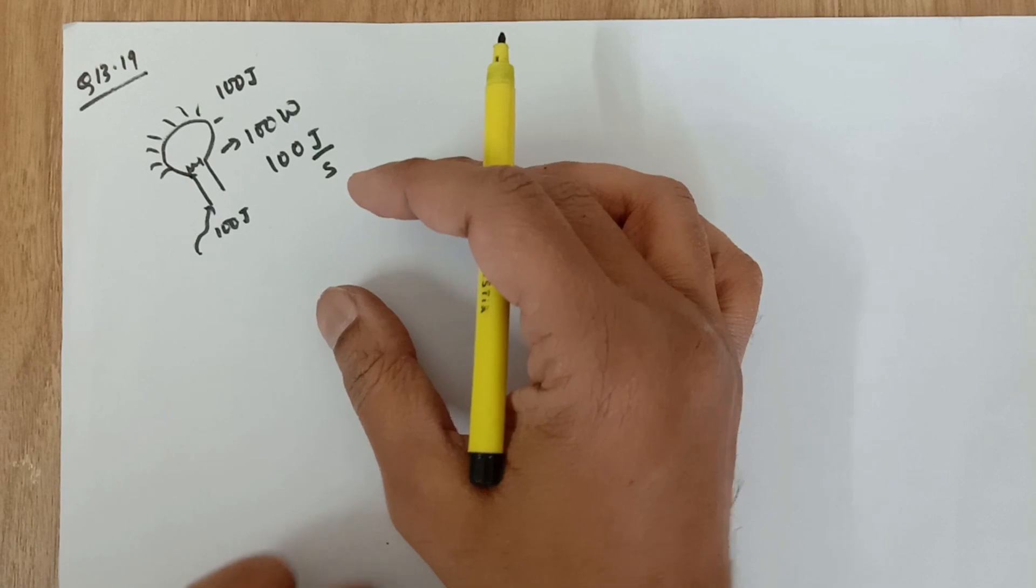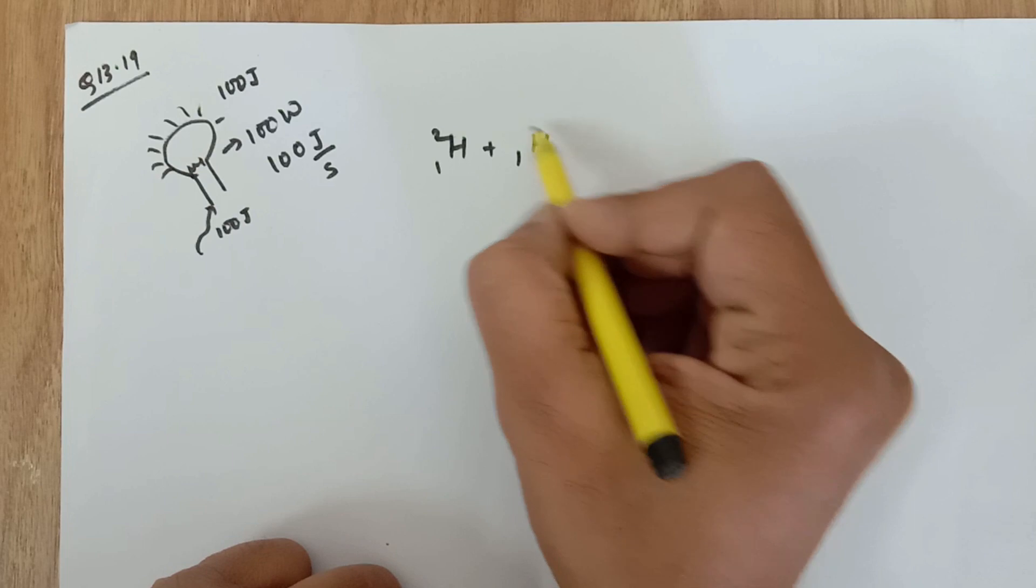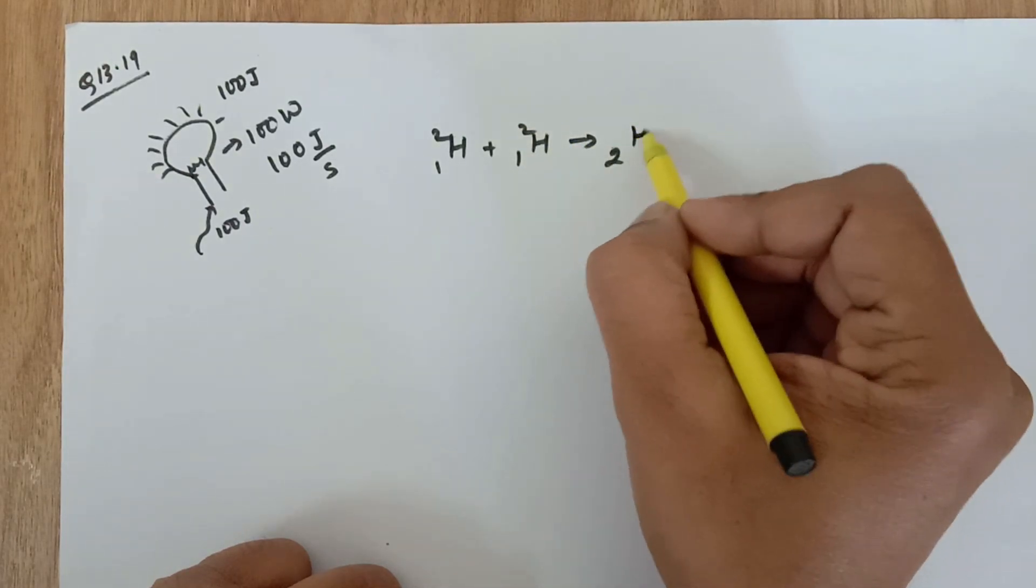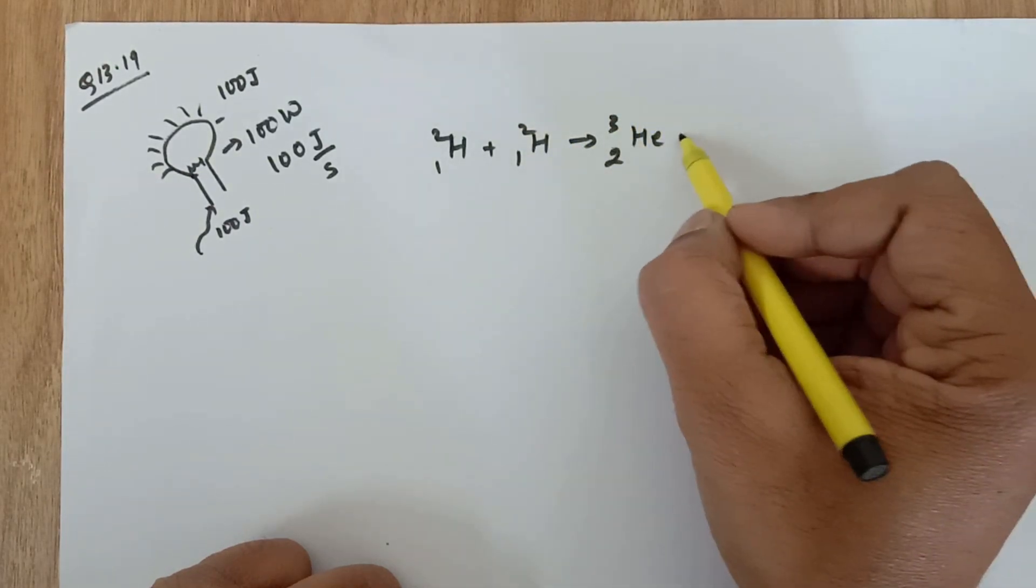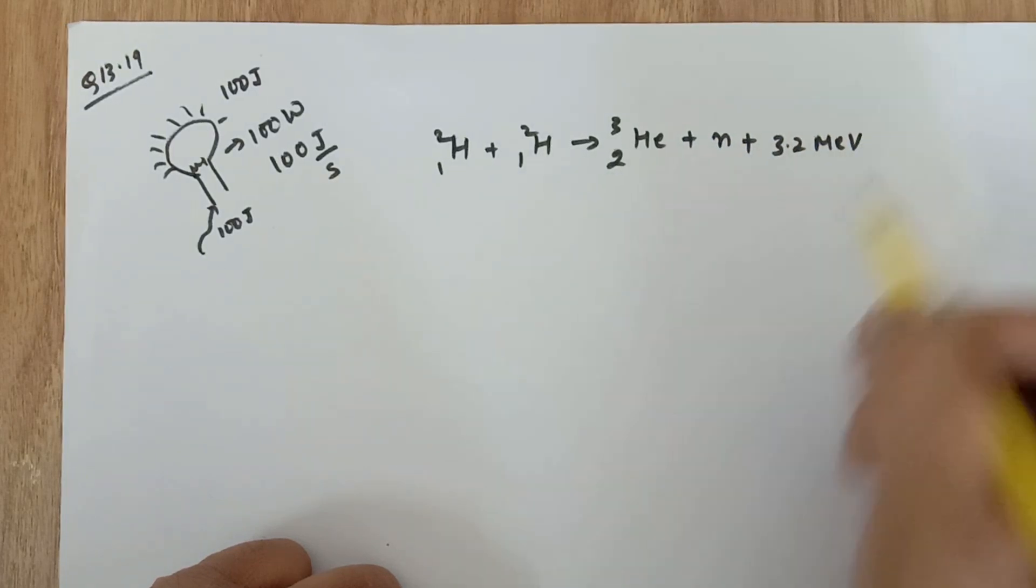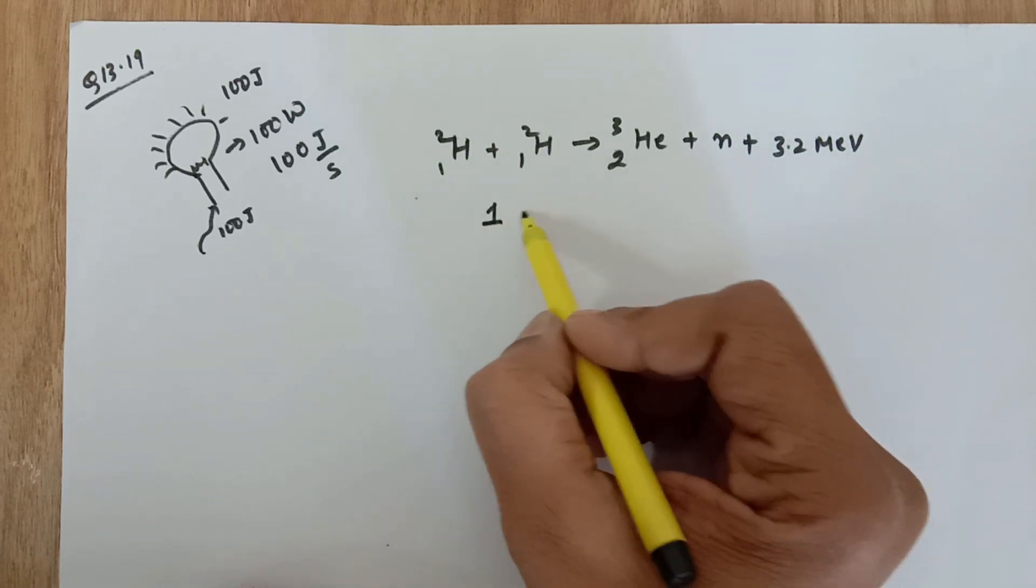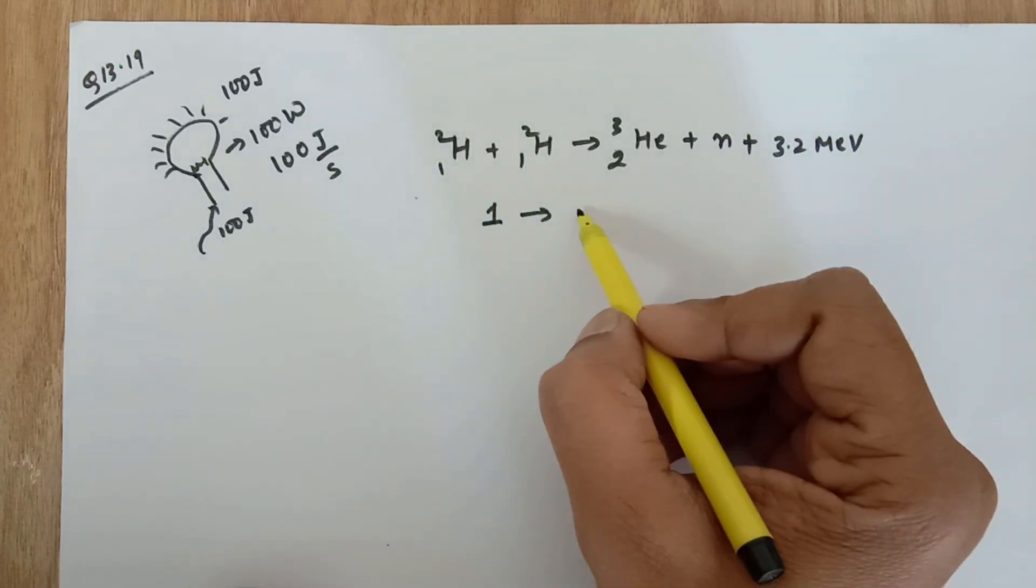Now we are given this reaction: 1H2 plus 1H2 gives 2He3 plus a neutron plus 3.2 MeV energy. That means if one deuterium atom goes off, it gives 3.2 divided by 2.